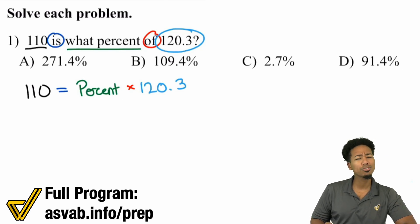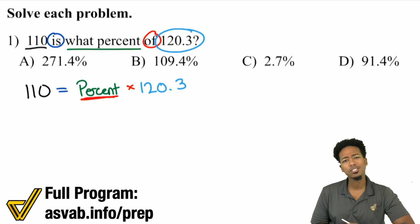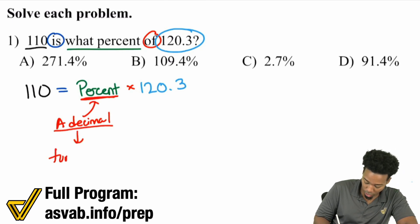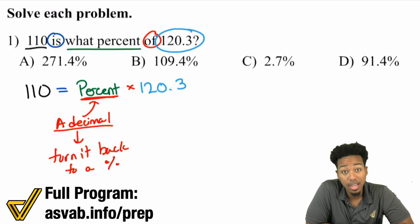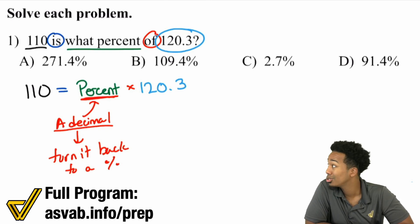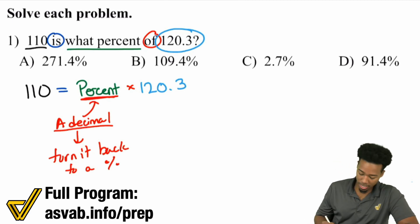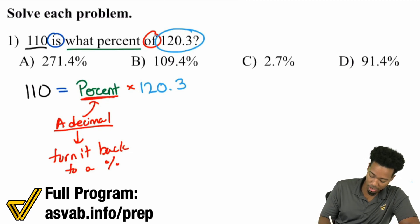But here's the only problem. Remember, what are we supposed to do when we include a percent inside of an equation? We turn it into a decimal. And so remember that this is in decimal form. So once we figure it out, turn it back to a percent. You see that to get this percent by itself, you've got to divide that 120 out.